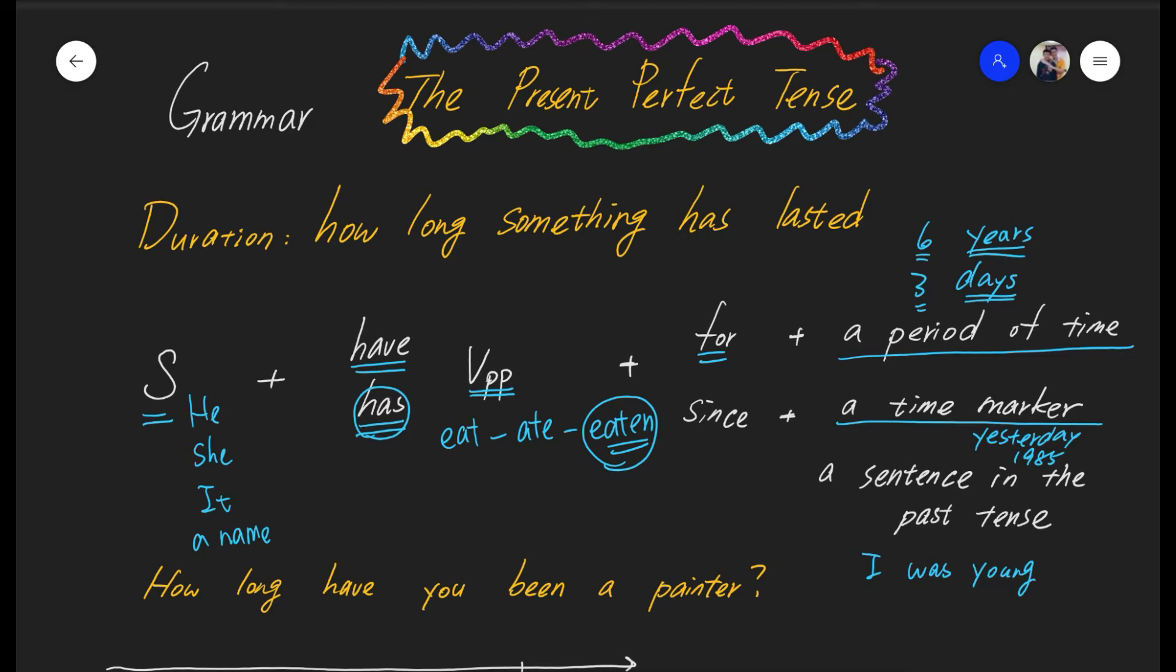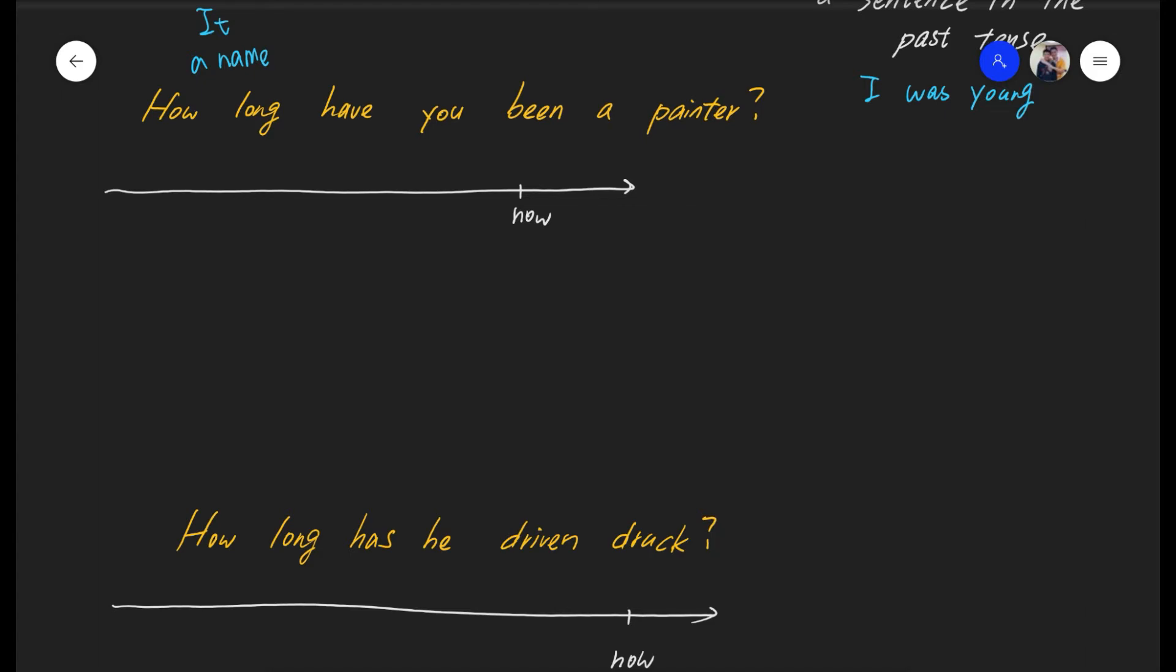So this is the basic pattern of the present perfect tense. Now let's start using this to answer some questions. Now let's try to answer this question. How long have you been a painter?